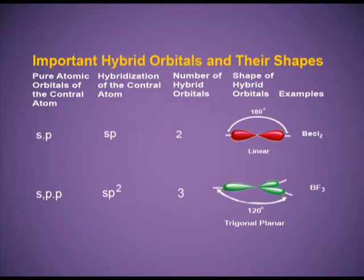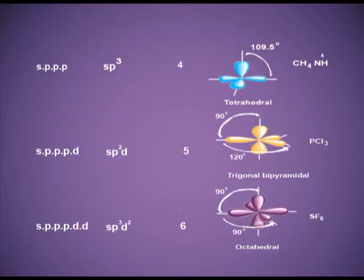This is the summarized chart for hybridization. Hybridization can involve the mixing of S, P, and D orbitals, and accordingly it can be SP, SP3, SP2, SP3D2, and SP3D hybridization.